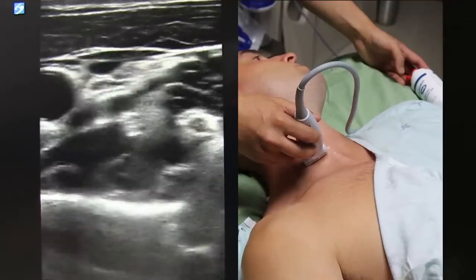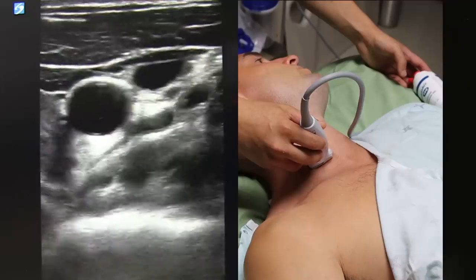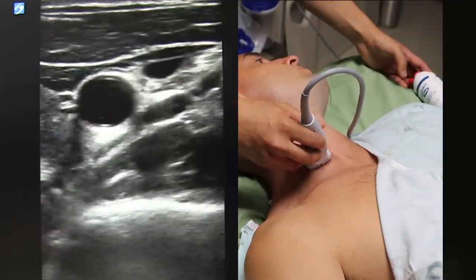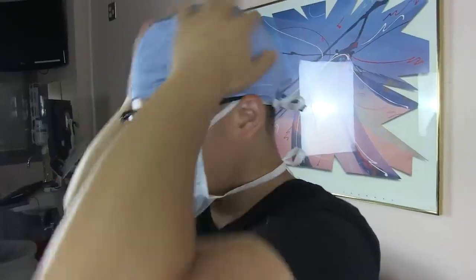And I know this is the internal jugular because it is lateral and superficial to that other vessel, which must be the carotid. You can convince yourself further by doing some compression testing. The vein will compress and the artery will remain plump and pulsatile. Well, with that out of the way, let's grab some PPE and get the supplies we need for the procedure.